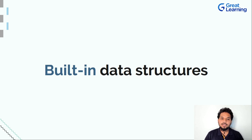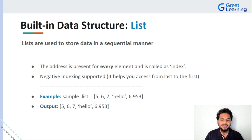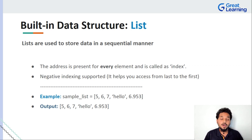Now let's take a look at all the built-in data structures. A built-in data structure is present natively in the Python library. When you look at lists, tuples, sets, and dictionaries, all of these are present directly for usage — you do not have to install anything on top of Python or work with any sort of dependencies to work with these.